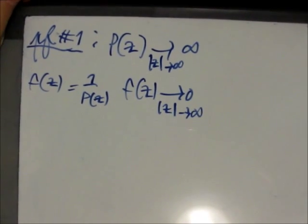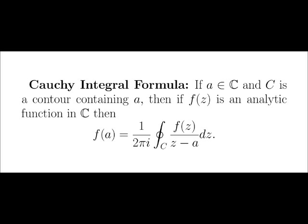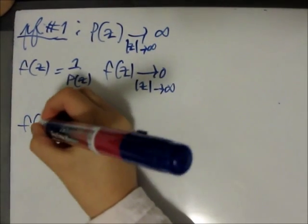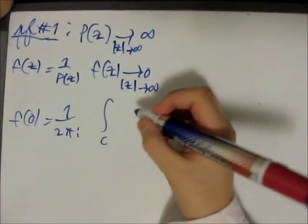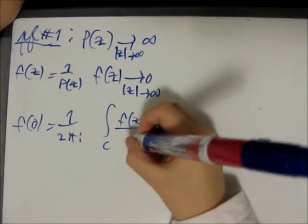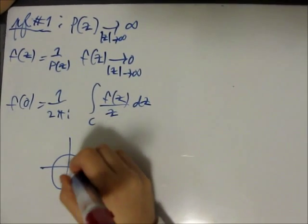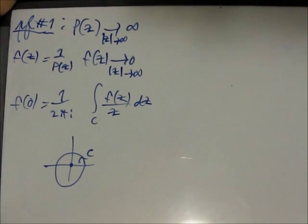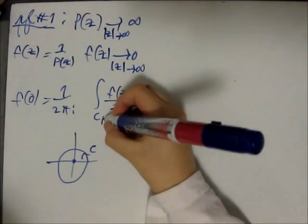Now we can apply the Cauchy integral formula. We know that F of 0 is 1 over 2 pi I times the integral in some contour C of F of Z divided by Z, DZ, where C is any contour that contains 0. In particular, we can choose C to be the circle of radius R. Let's call that circle C sub R.